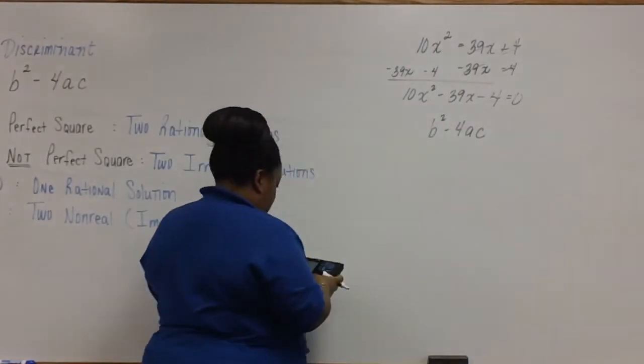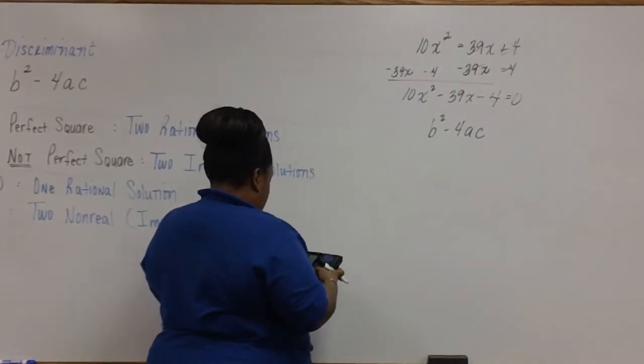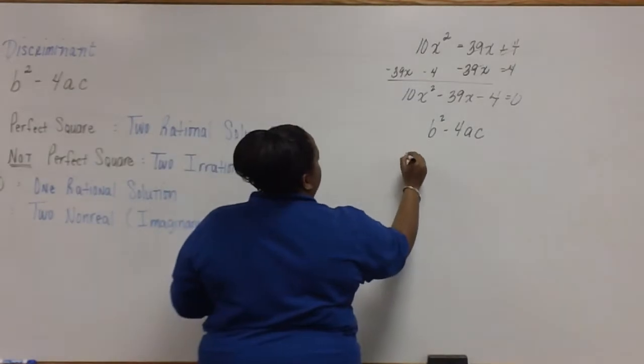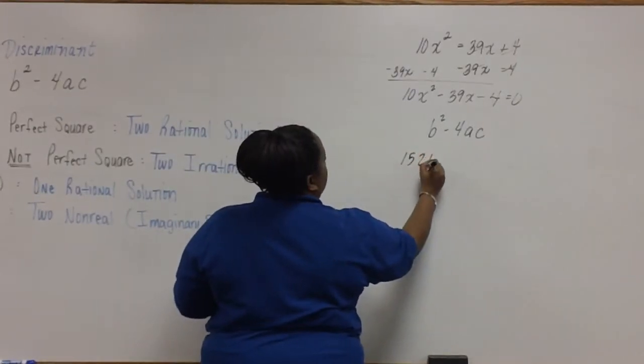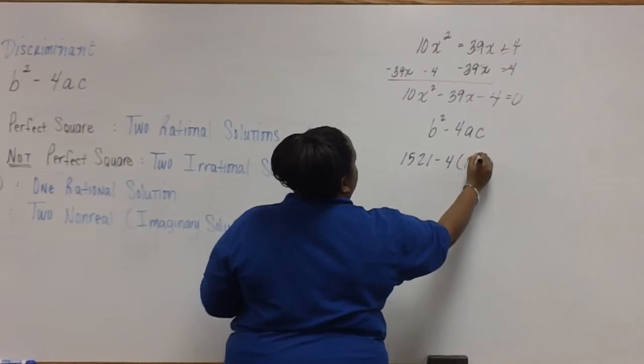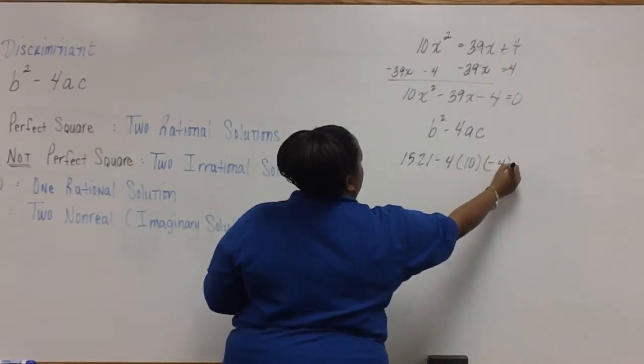First thing we need to do is square our b. So 39 squared is 1521, minus 4 times 10 times negative 4.